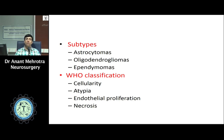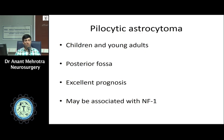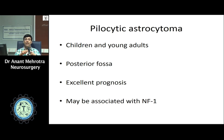Pilocytic astrocytomas are grade 1 tumors classically seen in children or young adults, most commonly in the posterior fossa, and have excellent prognosis with complete excision. They may or may not be associated with neurofibromatosis type 1. Grade 2 diffuse astrocytomas are commonly encountered in young adults in the supratentorial compartment. Complete excision may be a problem due to tumor infiltration, especially near eloquent cortex. These grade 2 tumors have a tendency for malignant transformation — after about 8 to 10 years, they may transform into grade 3 or grade 4 tumors.